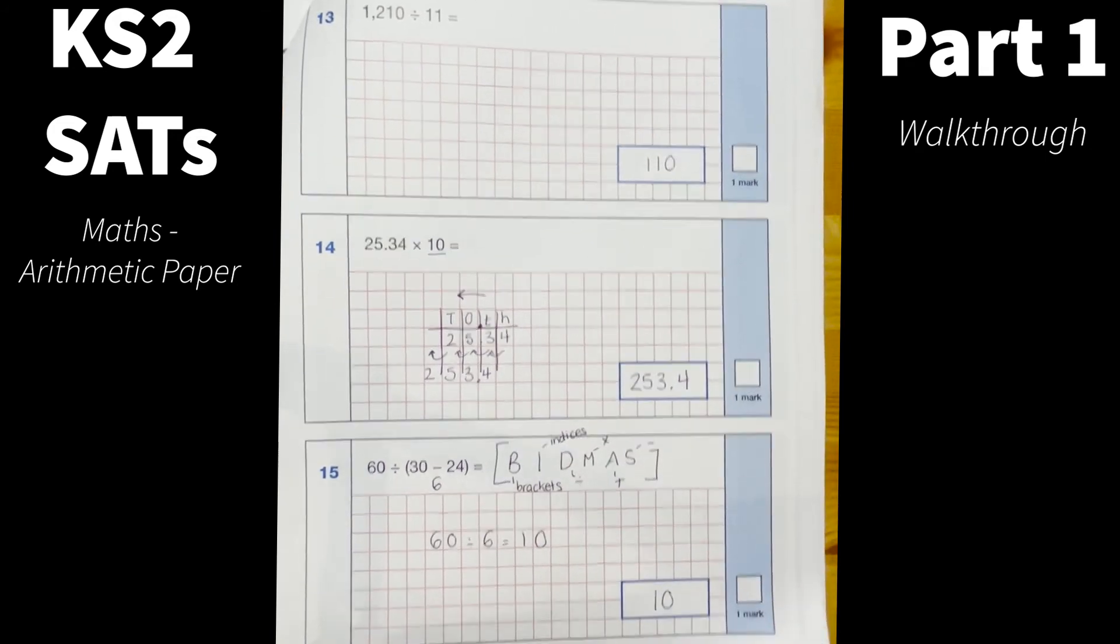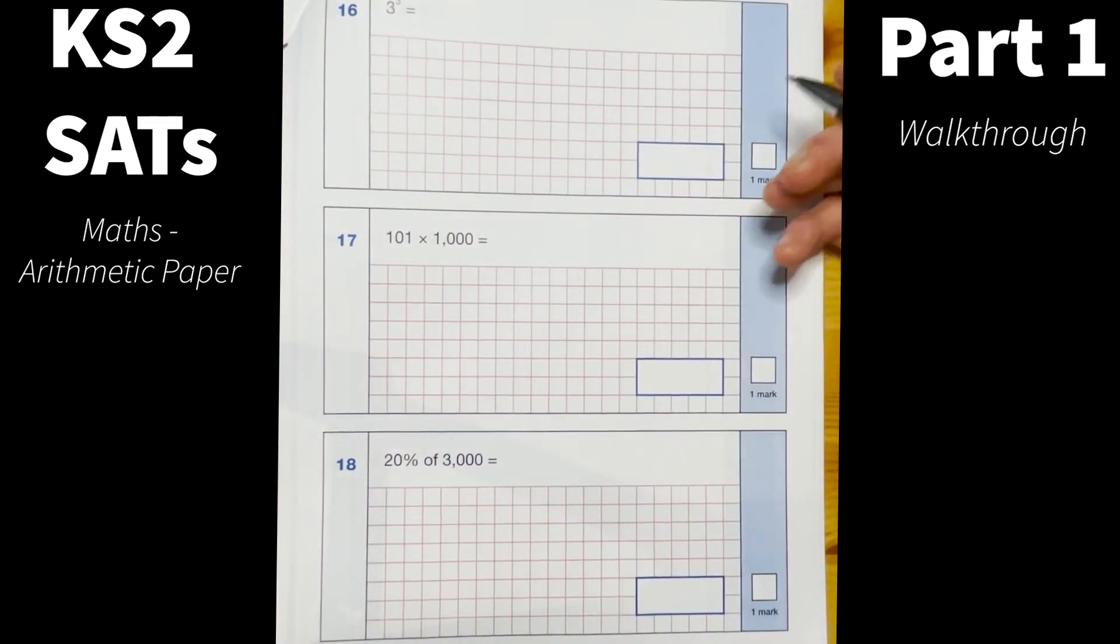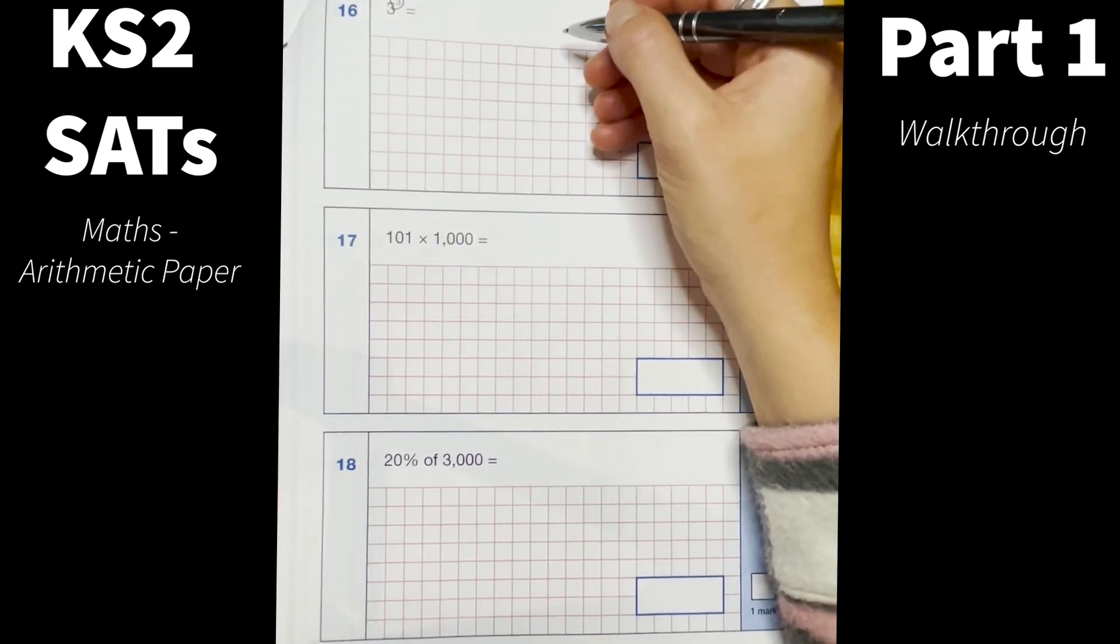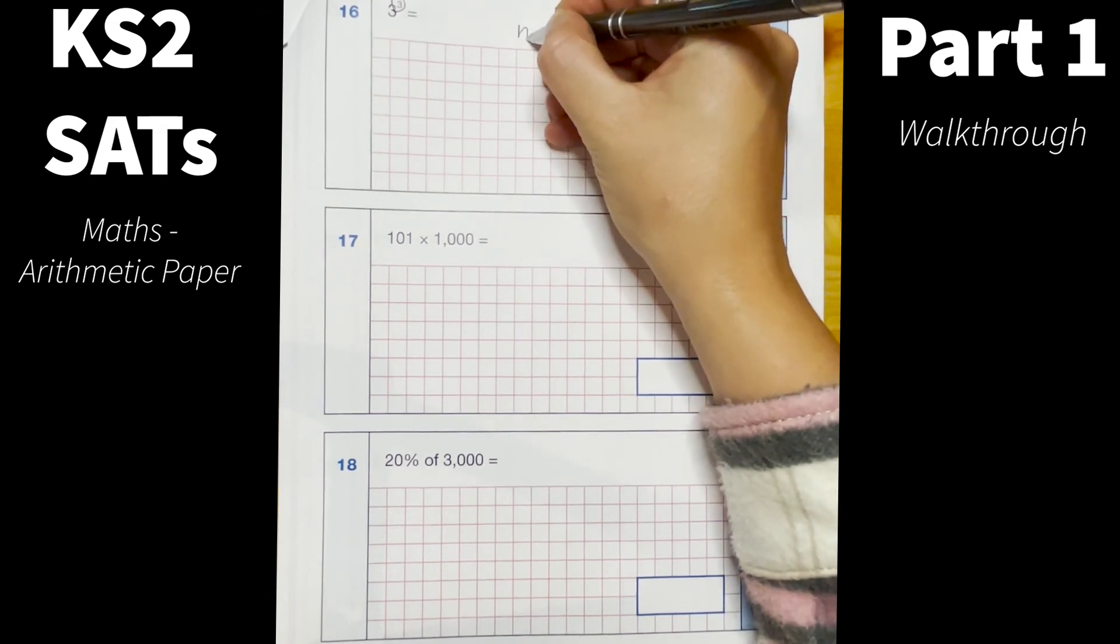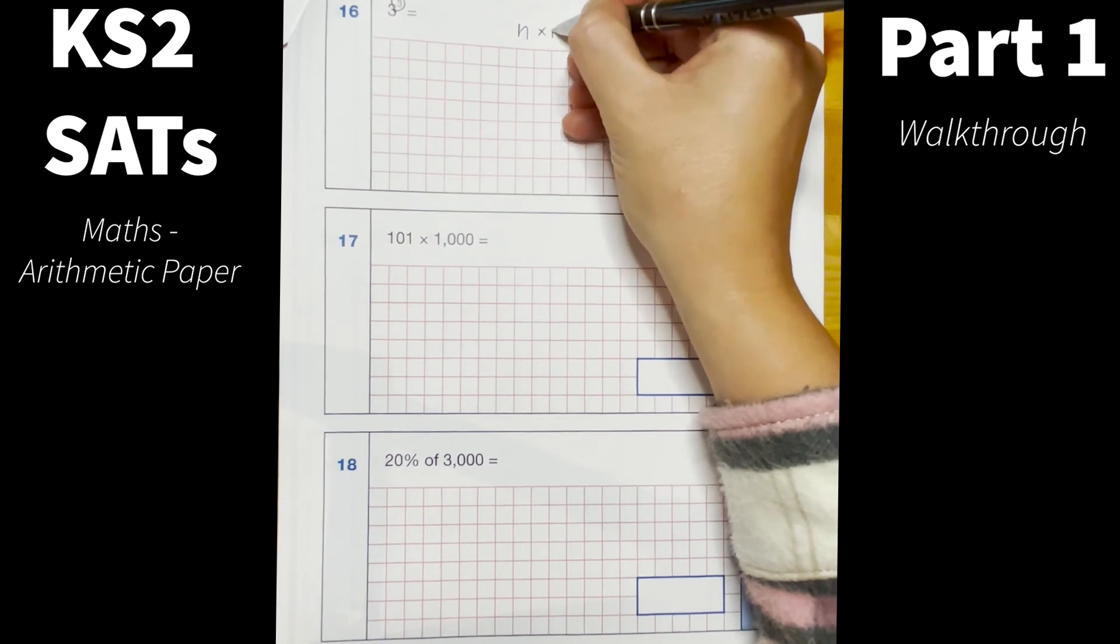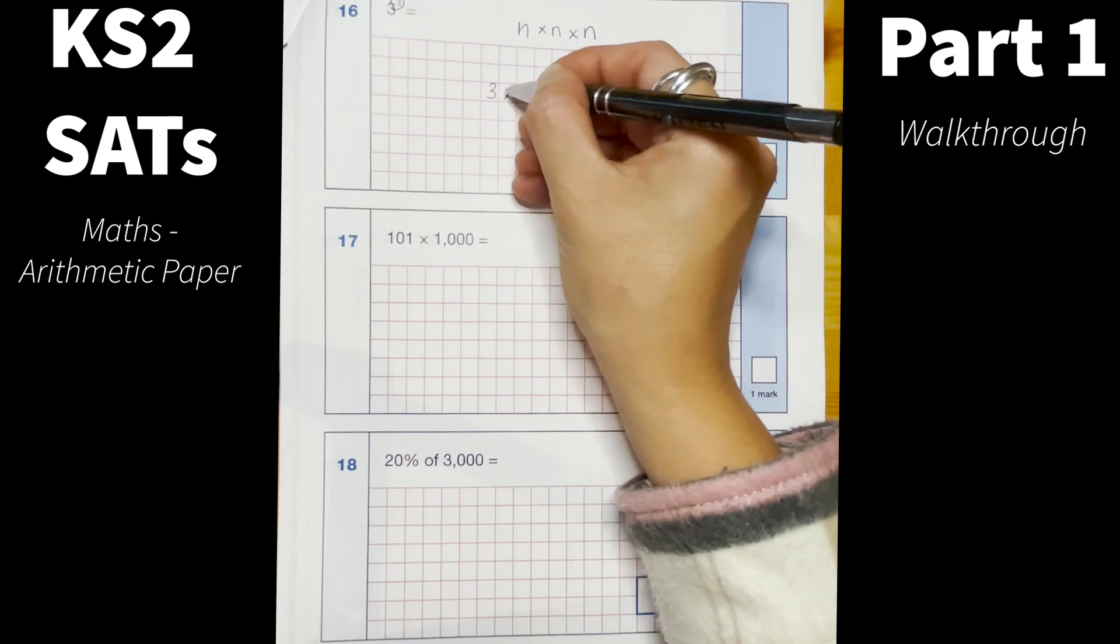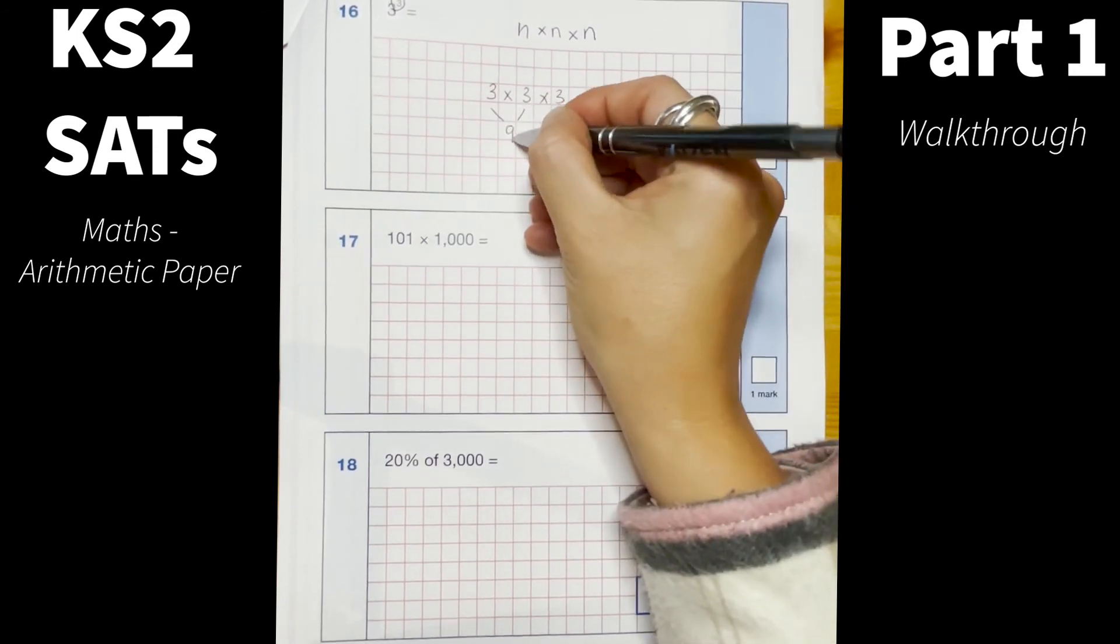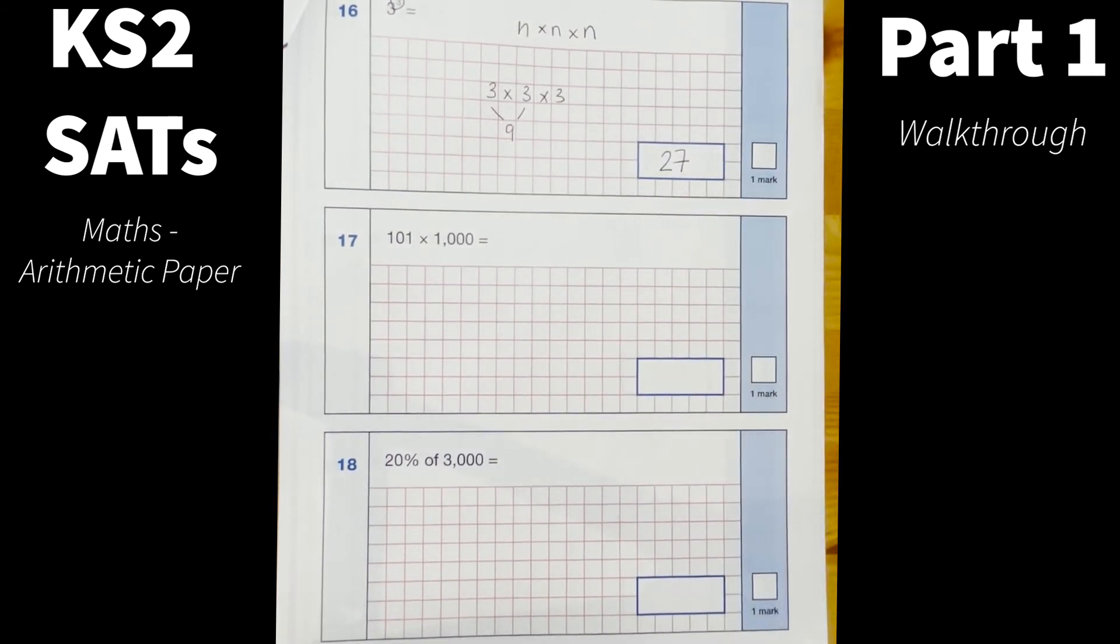Okay number 16, 3 cubed. So what cubed means is I take a number and I times it by itself three times. So if n is my number I would need to do n times n times n. So in this situation it's 3 cubed, so 3 times 3 times 3. I know that 3 times 3 equals 9, and 9 times 3 equals 27.